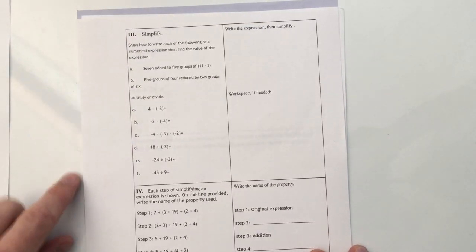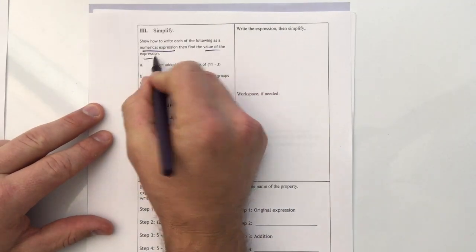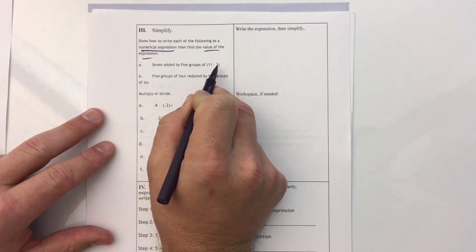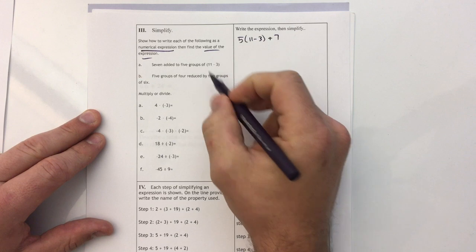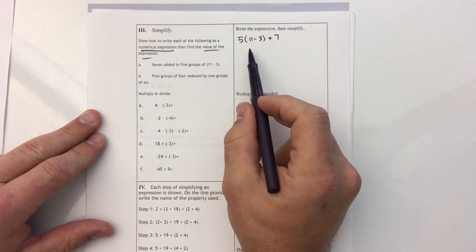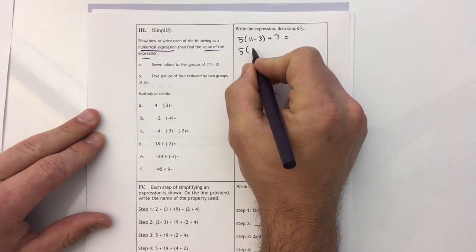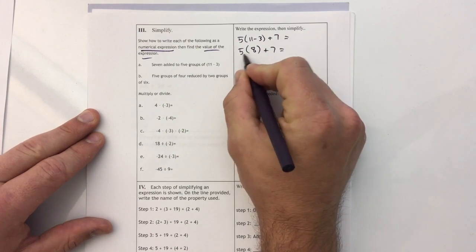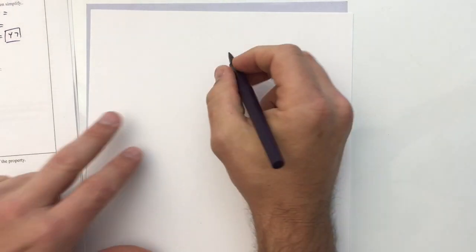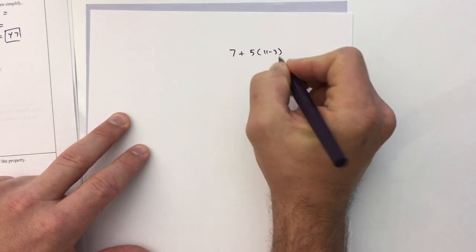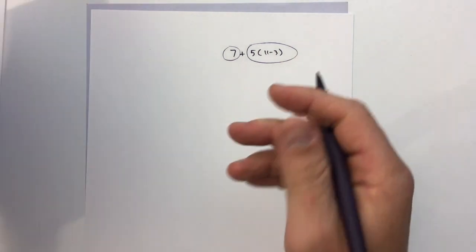Section three: simplify and show how to write each of the following as a numerical expression, then find the value. 'Seven added to five groups of 11 minus 3' — I start with five groups of 11 minus 3; groups mean parentheses. Then I add seven. You could have flipped the order since it's addition. Simplifying: do the subtraction in parentheses first — five groups of eight, plus seven. Five times eight is 40, plus seven is 47. A lot of people who did it the other way did seven plus five first and got mixed up.